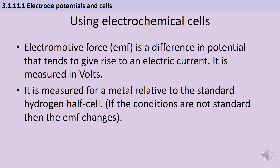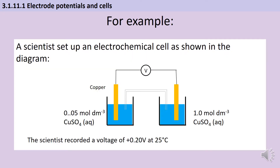Remember it has to be standard because if the standard conditions are changed then the EMF will change. So if you have a cell that includes half cells that maybe don't have a concentration of one molar, or if you tried to measure it at a different temperature or a different pressure, then the EMF would change for that cell. For example, we've got two half cells which both contain copper and both contain copper sulfate — you would expect there isn't any difference, so there isn't going to be any current flowing or potential difference. But actually there is a potential difference, because these aren't both standard half cells. The one on the right is a standard half cell with a concentration of one mole per decimeter cubed, but the one on the left has a much lower concentration, so we do see a potential difference.